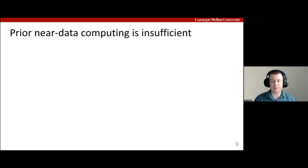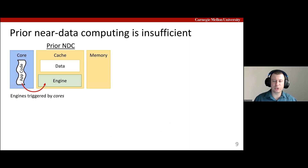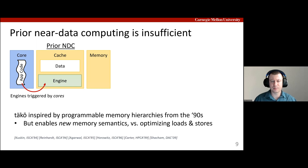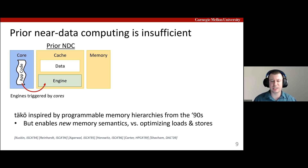In particular, prior near-data computing designs do not provide this capability — they merely offload compute from cores closer to data. This might reduce data movement, but does not enable the kinds of optimizations we see in prior specialized hierarchies. Instead, TACO takes inspiration from work done in the 90s on programmable memory hierarchies, which exposed more data movement to software. However, those systems were responding to the trend towards multiprocessing and focused on optimizing the coherence protocol to improve the performance of loads and stores. In contrast, TACO is responding to the trend towards hardware specialization designed to implement entirely new semantics in the cache hierarchy.